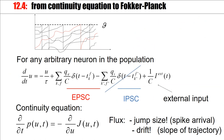We have many neurons in the population. They have membrane potential trajectories given by this differential equation. We focus on a term that causes jumps of the membrane potential. The jump size is Q over C, and I will call it delta U jump.